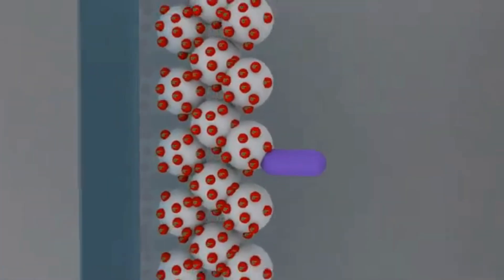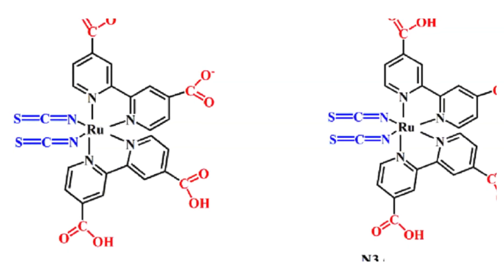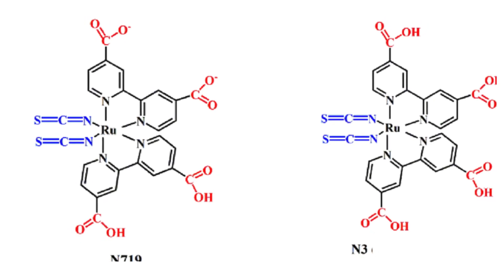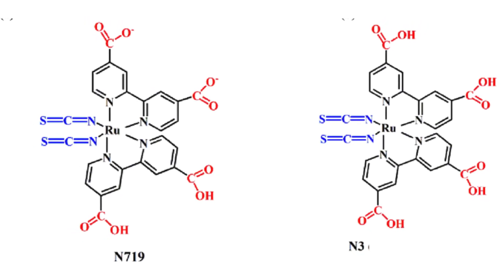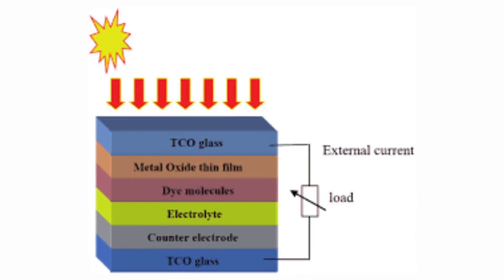Dyes used in dye-sensitized solar cells include established ruthenium-based dyes like N3 and N719, metal-free organic dyes such as carbazole, coumarin, and perylene derivatives, and natural dyes including chlorophyll, anthocyanins, and betalins from plants like spinach, red cabbage, and bougainvillea.